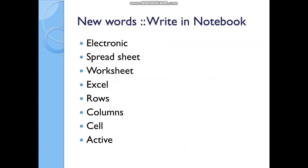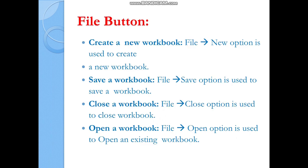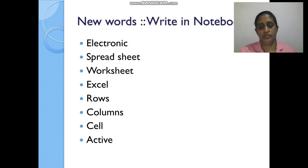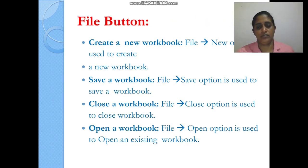It is important to understand the terms workbook and worksheet. When you open MS Excel, the vast working area you get for typing is called a worksheet. Many worksheets can be used together. By default, three worksheets are available in the sheet tab, which is located just above the status bar at the bottom. You can insert as many worksheets as needed. Together, multiple worksheets form a workbook — and by default a file is called a workbook.